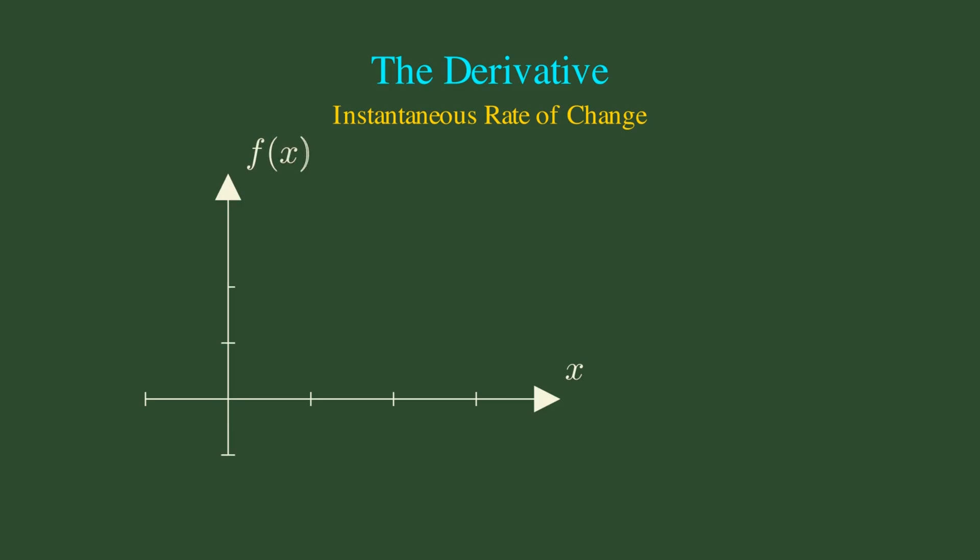Mathematically, start with the slope of a secant line between two points on a curve. As we see here, the slope between points A and B is simply rise over run, the difference in Y values divided by the difference in X values. But here's where calculus becomes magical.